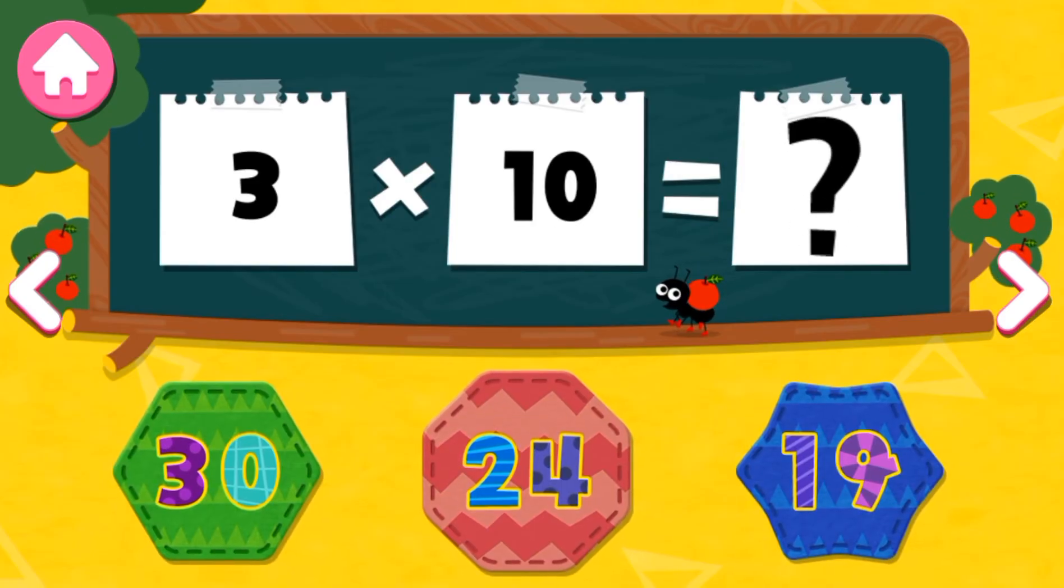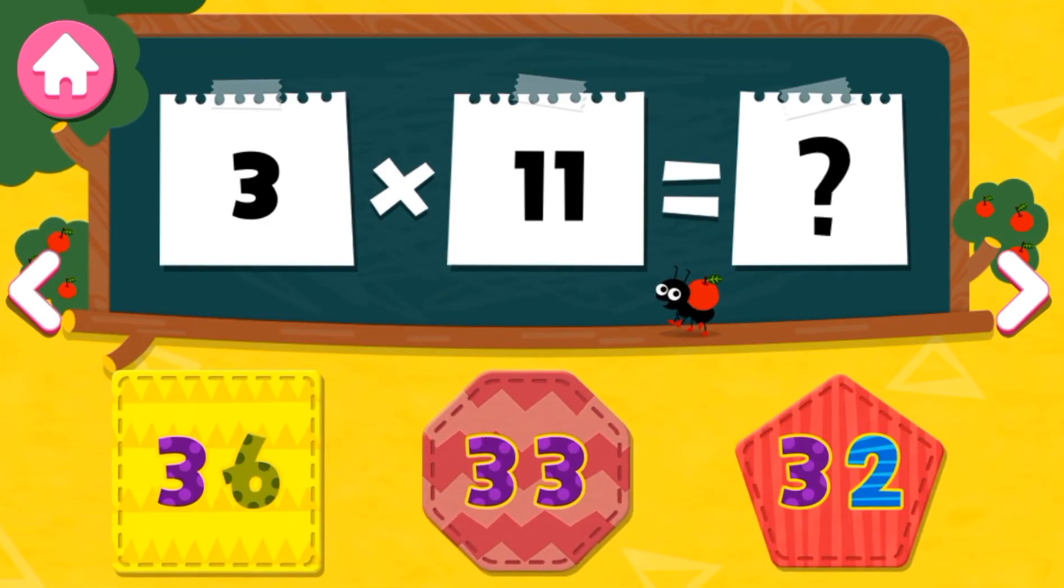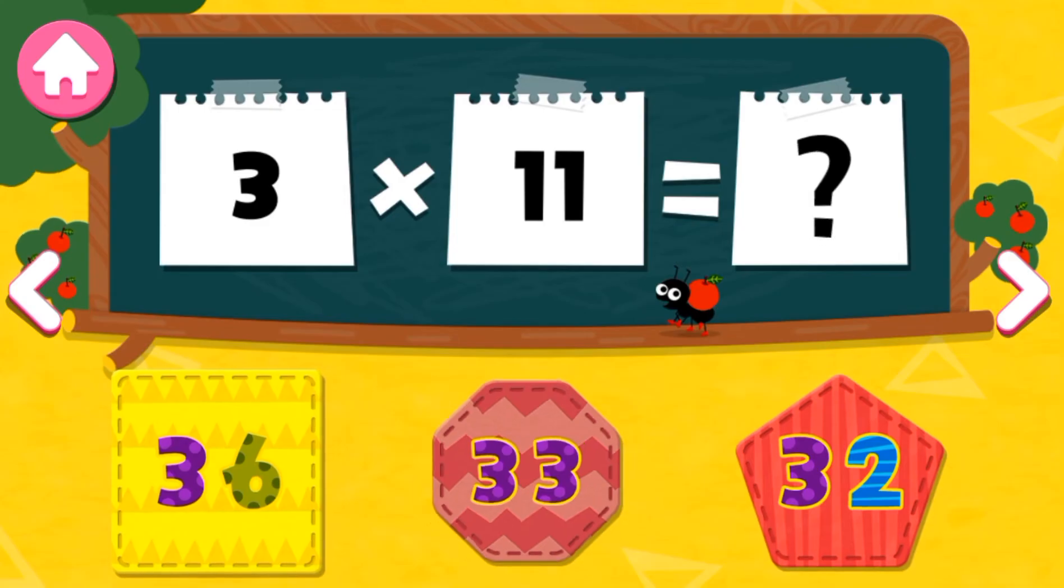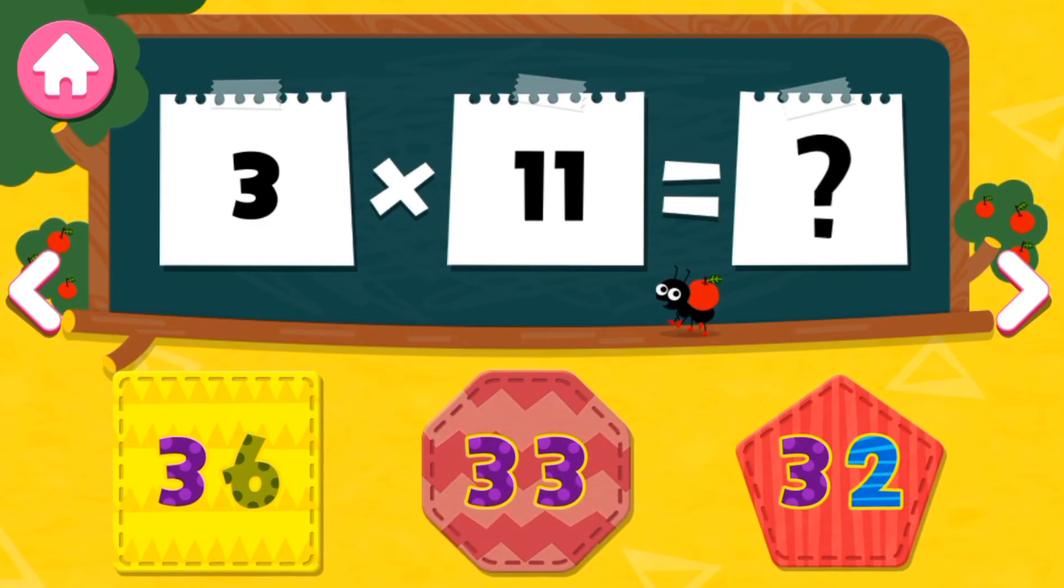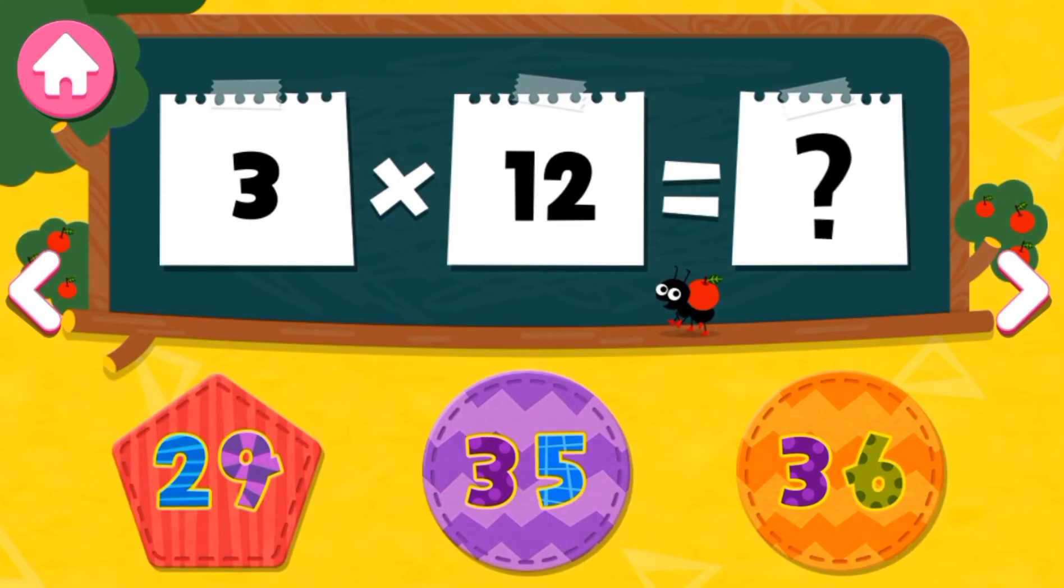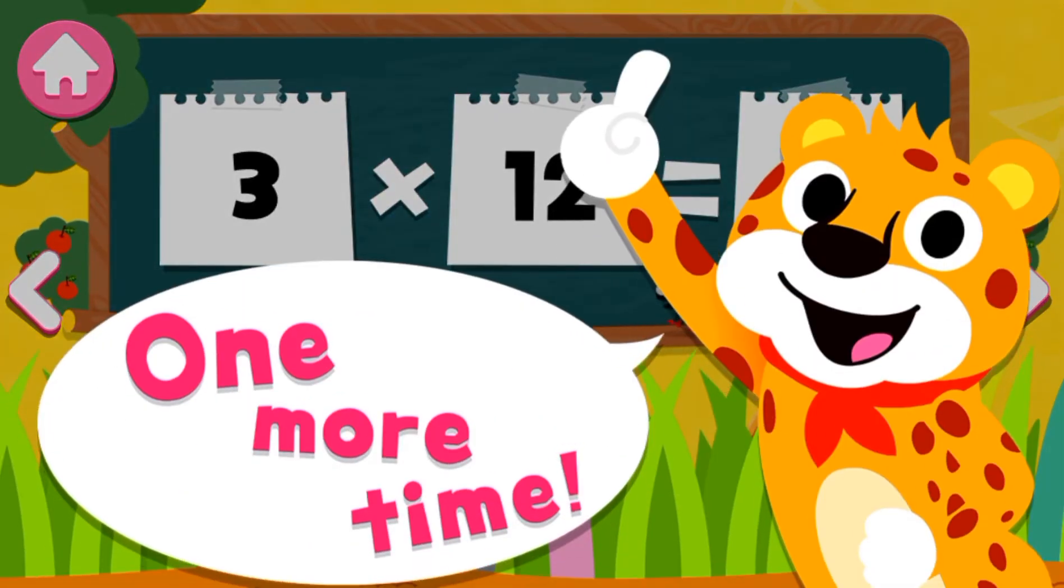3 times 10 is... 30. 3 times 11 is... 33. 3 times 12 is... 36. One more time.